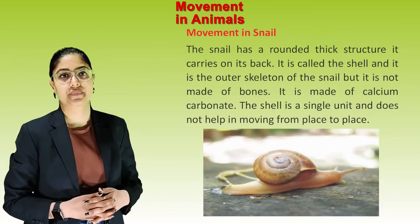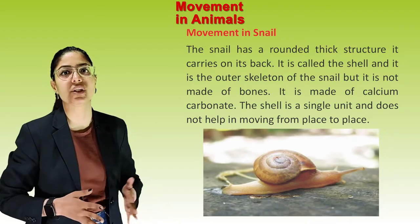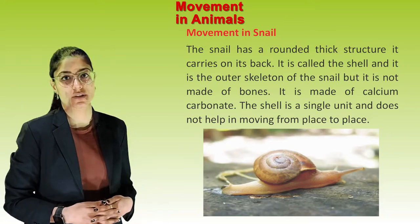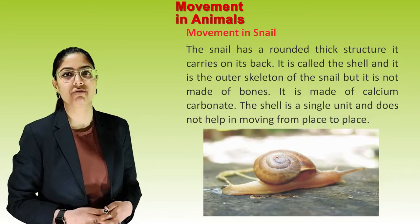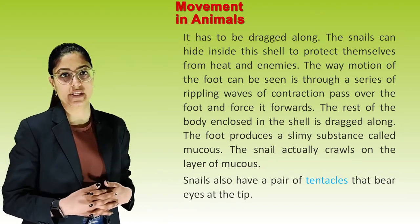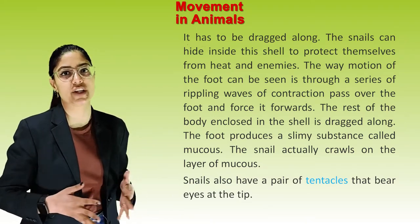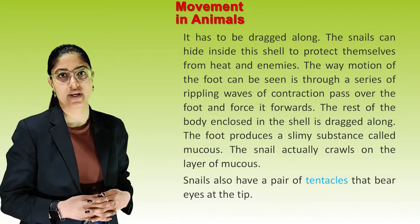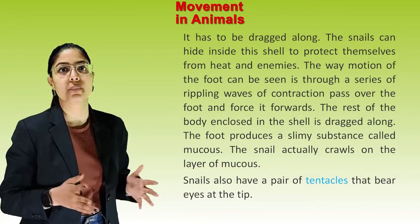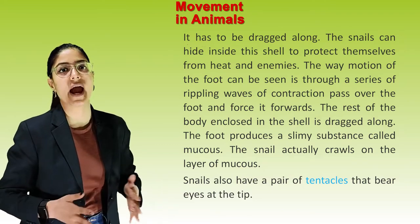Movement in snail. The snail has a rounded thick structure it carries on its back called the shell, which is its outer skeleton but is not made up of bones — it is made up of calcium carbonate. The shell does not help in moving; it has to be dragged along. The snail can hide inside the shell to protect itself from heat and enemies. A series of rippling waves of contraction pass over the foot and force it forwards, dragging the rest of the body along. The foot produces a slimy substance called mucus, and the snail crawls on this layer of mucus. Snails also have a pair of tentacles that bear eyes at the tip.